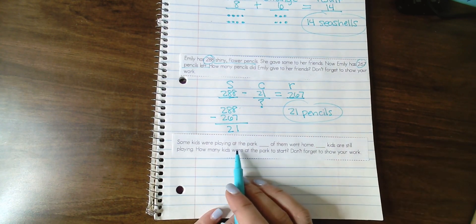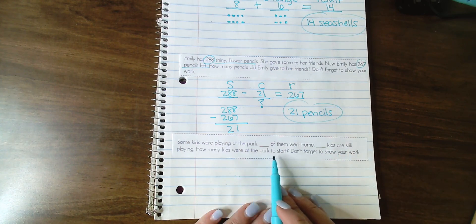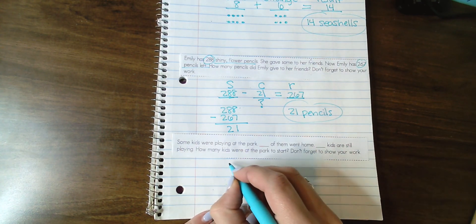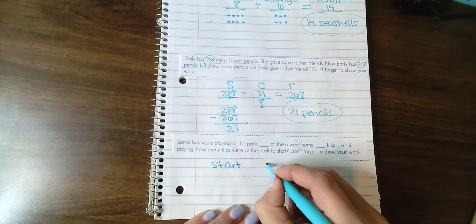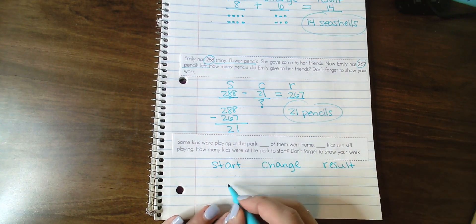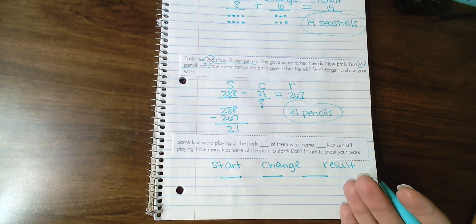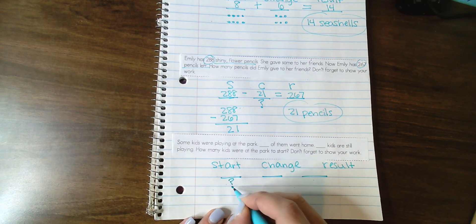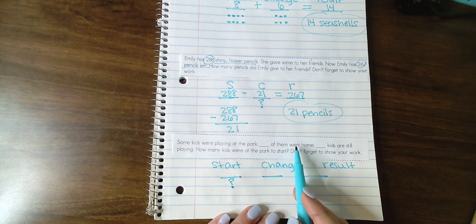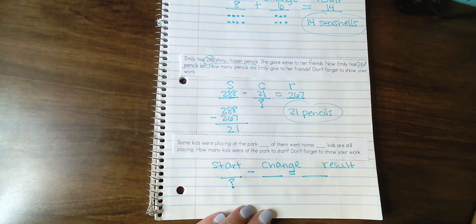In this example, some kids are playing at the park. Blank of them went home. Blank kids are still playing. How many kids were at the park to start? To set this up, we are going to write out start, change, result or SCR, whichever you prefer. We're going to draw our three blanks underneath. Then, even though we don't know the numbers, we can still talk through the actions that are taking place. I'm going to say, some kids were playing at the park. Do we know how many kids are playing at the park to start with? No, we don't. That is our question. We know that some of them went home. If they went home, are we going to add or subtract? We know we're going to subtract, so we're going to set this up as a subtraction problem.